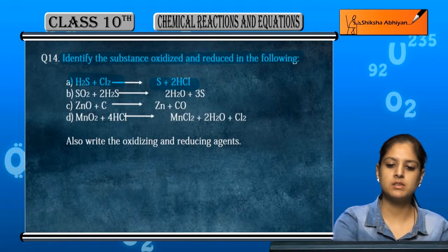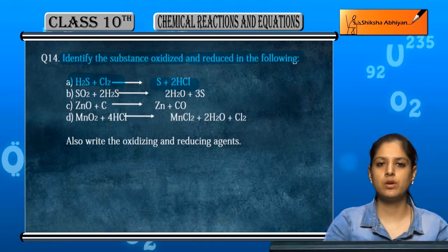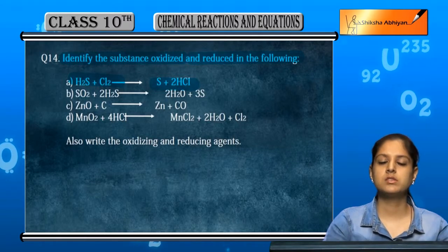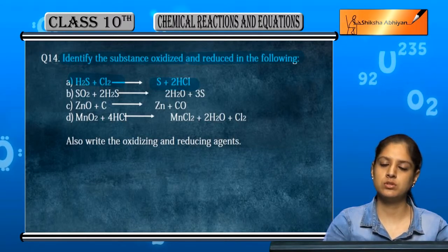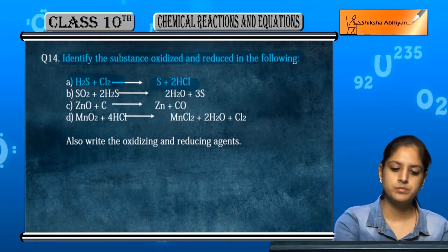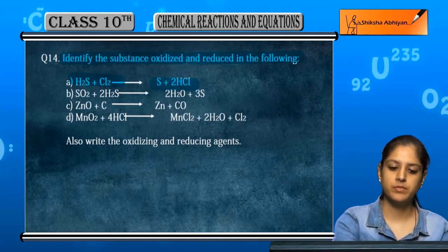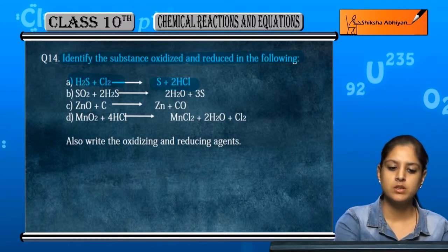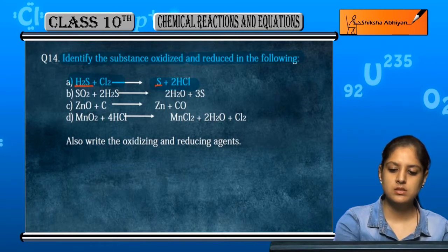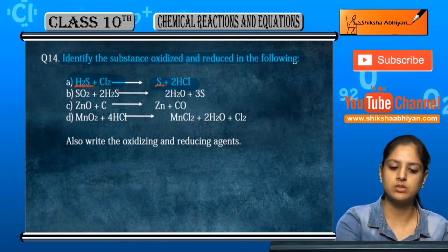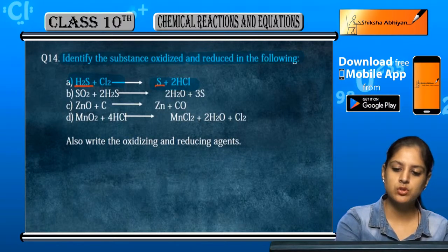When we talk about oxidation, it will be the addition of oxygen or removal of hydrogen. When we talk about reduction, it will be the addition of hydrogen or removal of oxygen. In this case, H₂S had hydrogen, but later S has no hydrogen, so H₂S is being oxidized.